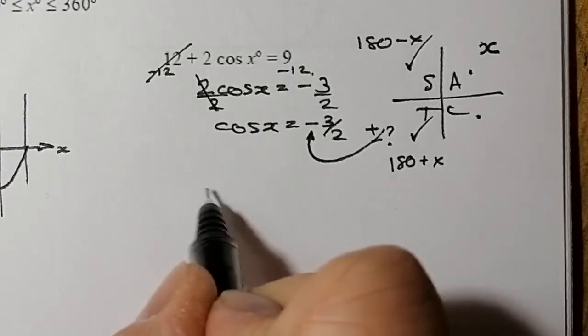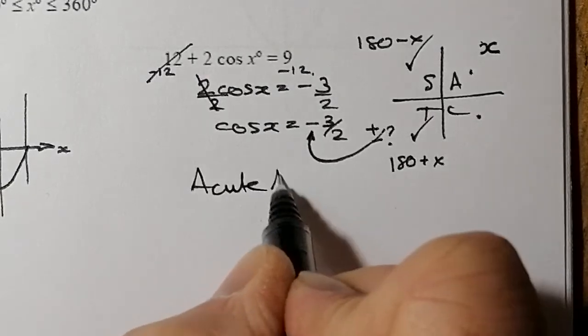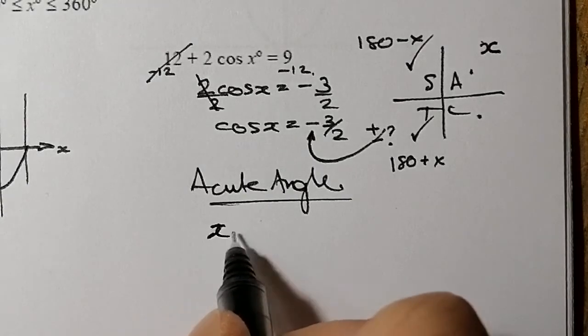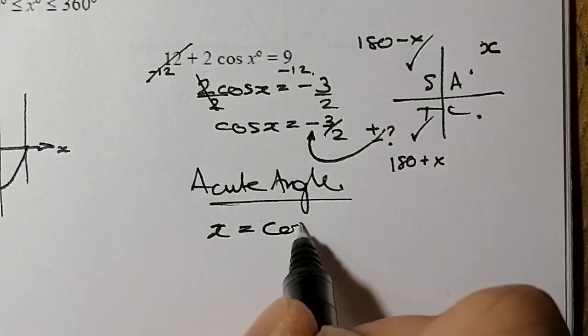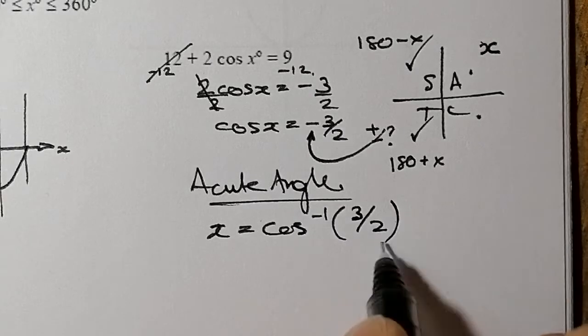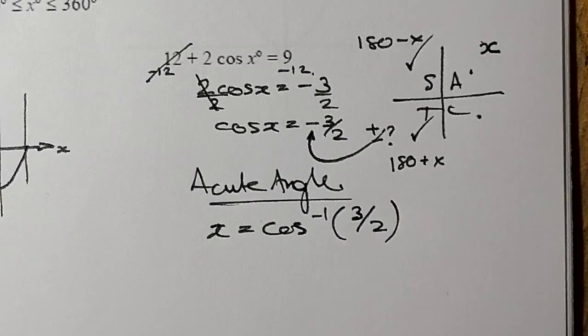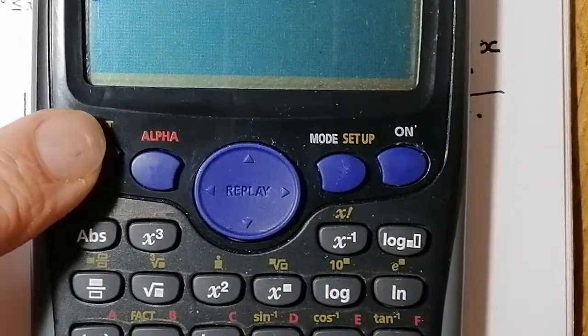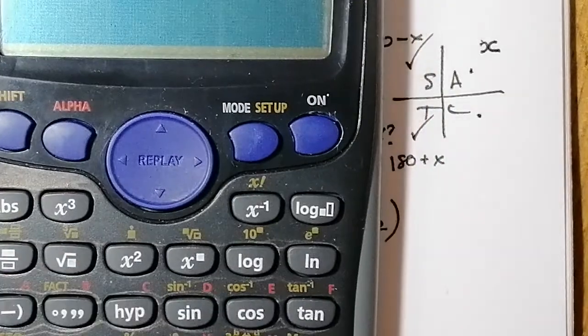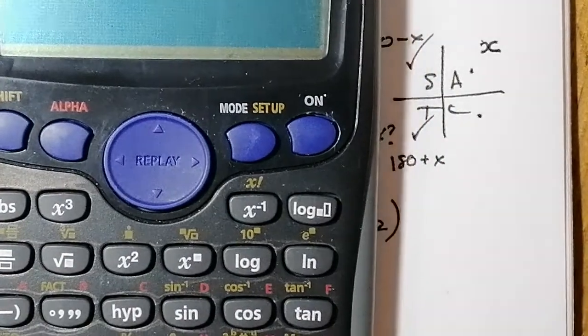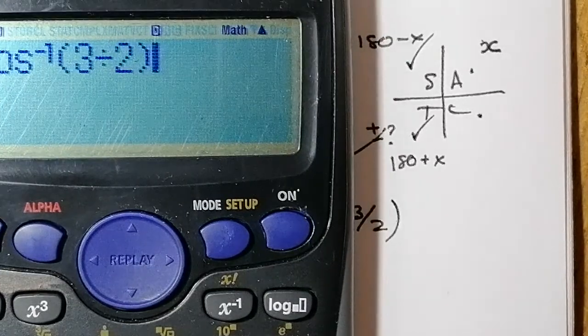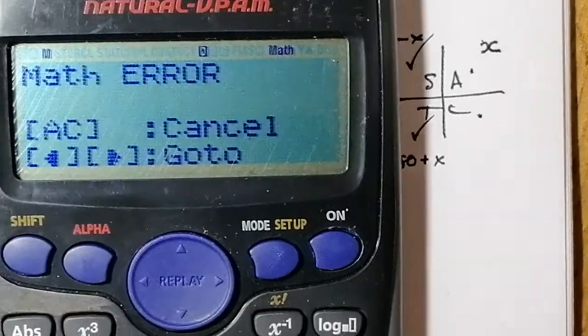Let's try to solve that. I'll work out the acute angle. So x = inverse cos of 3/2. I'm going to my calculator. I'm putting in the inverse, the shift button, then the cos button. And I'm going to put in 3 divided by 2. And I've got a math error that comes up here. So I wonder why that is.